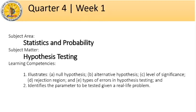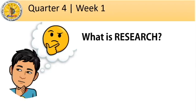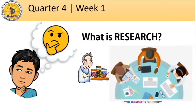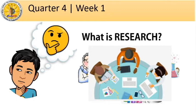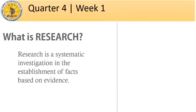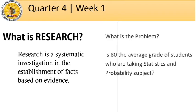Let's kick this lecture by defining what research is. When you hear about research, you probably think of science laboratories, science apparatuses, and scientists in white coats. This is the very setup of research in some disciplines. But students can also do their research, not in laboratories but in different forms. Research is a systematic investigation in the establishment of facts based on evidence. It always starts with a problem — let us say you want to know if 80 is the average grade of students who are taking the statistics and probability subject.